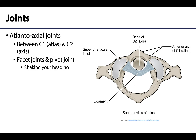Moving down one, there is a joint between C1 and C2, and it is really composed of three different joints: two facet joints on the inferior portion of C1's superior articular facets, and a more midline pivot joint between the dens — a small projection of C2 projecting up to the C1 level. This allows rotation or pivoting; think of shaking your head no.